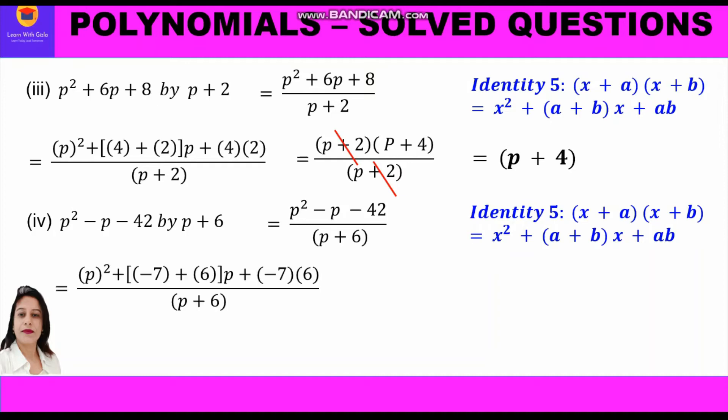So a equals minus 7 and b equals 6. We substitute in the identity and write in the numerator: p² + (−7+6)p + (−7×6) upon (p+6). We get two factors: (p−7)(p+6) upon (p+6). Now (p+6) cancels, and we get the answer p minus 7.